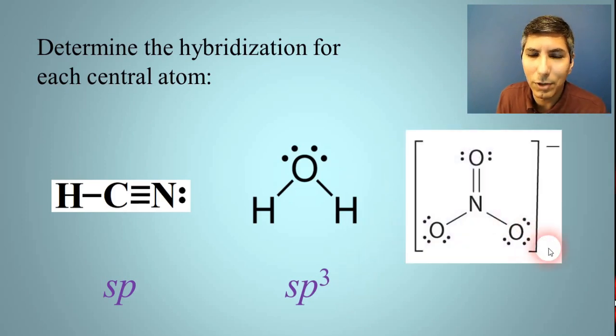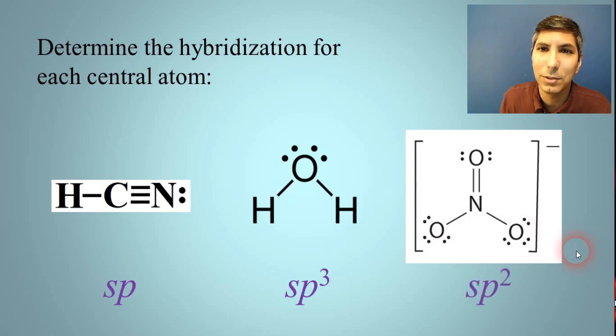And how about this structure here? We have the nitrate polyatomic ion. So, what's the hybridization of that nitrogen in the middle? Well, how many sigma bonds? 1, 2, 3. Because 1 of those is a pi bond and doesn't count. Any unshared pairs on the nitrogen? There aren't, are there? So, 3 plus 0 equals 3. And that steric number of 3 gets us a hybridization of sp2.